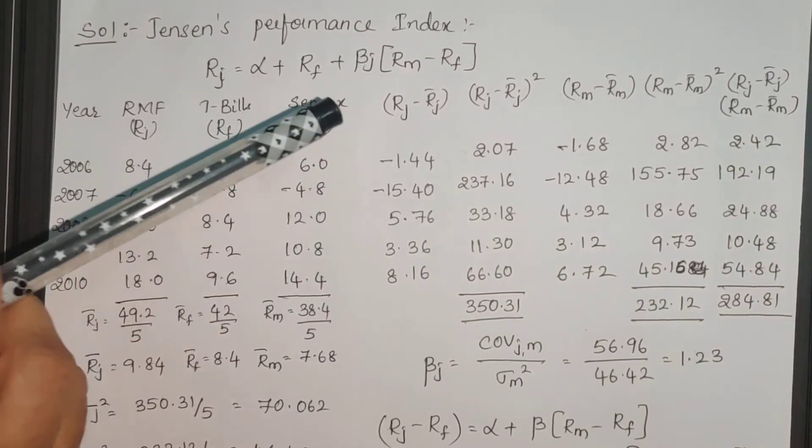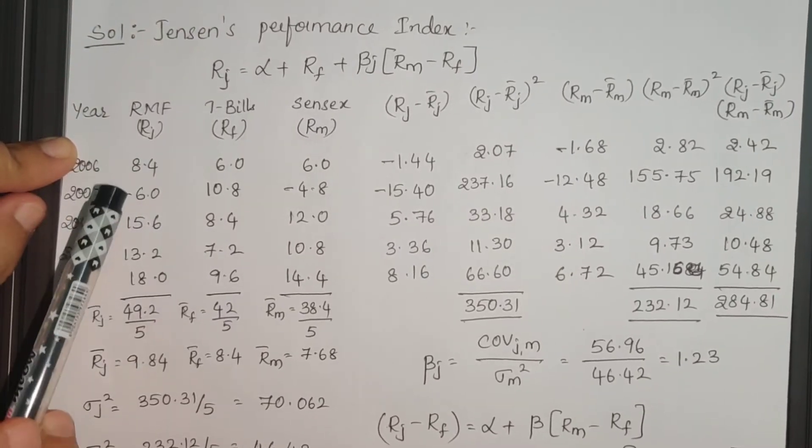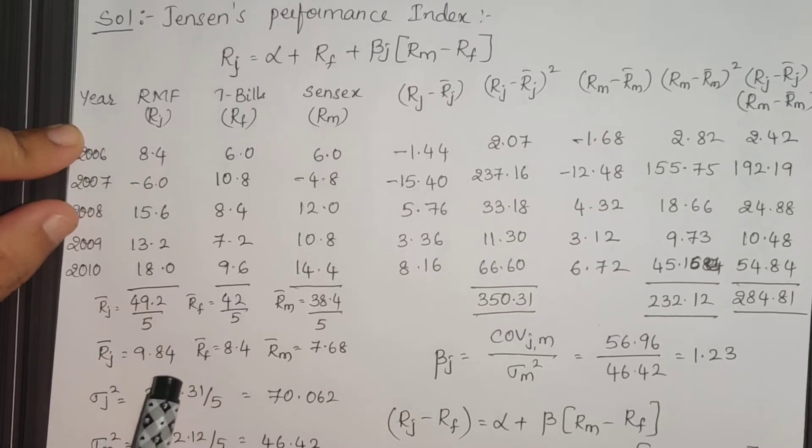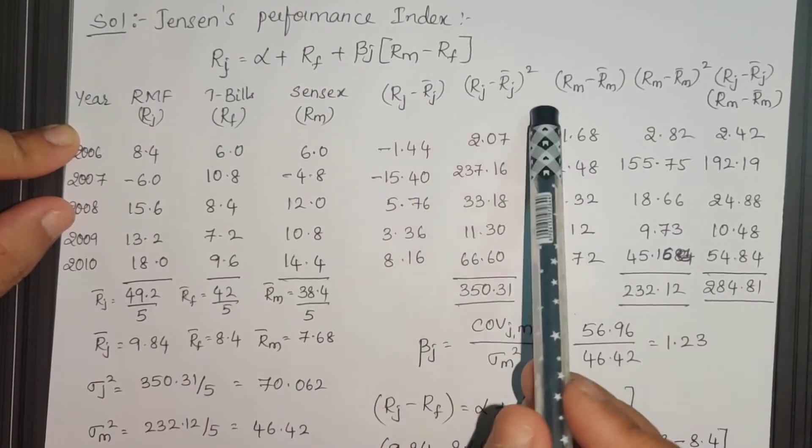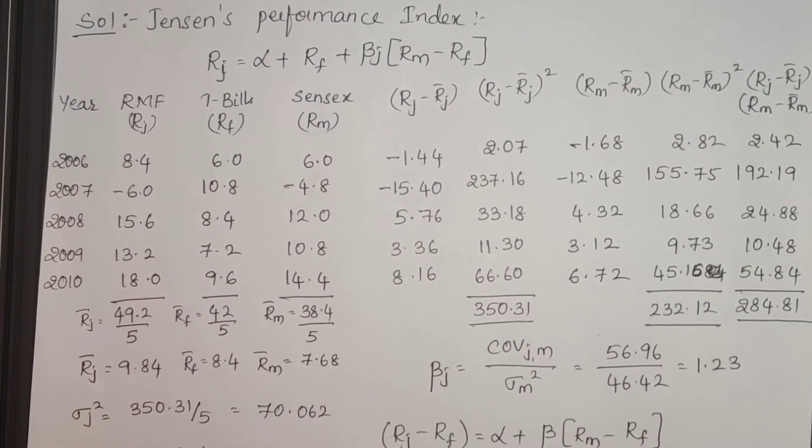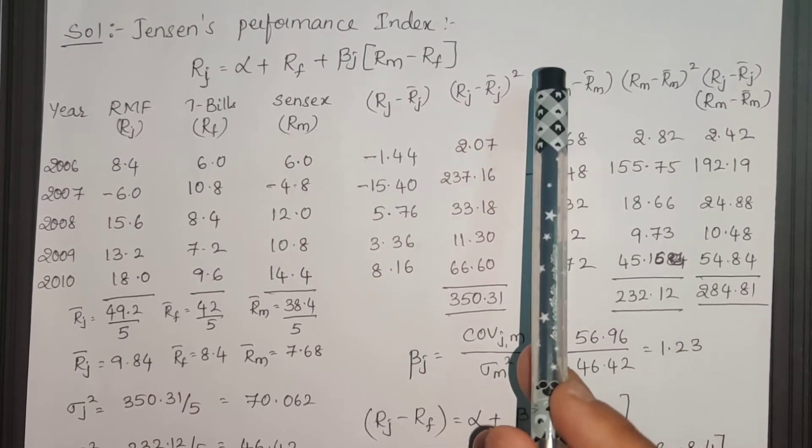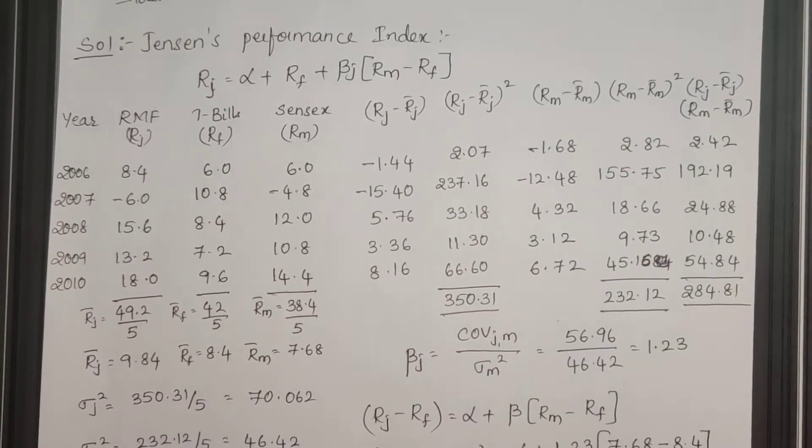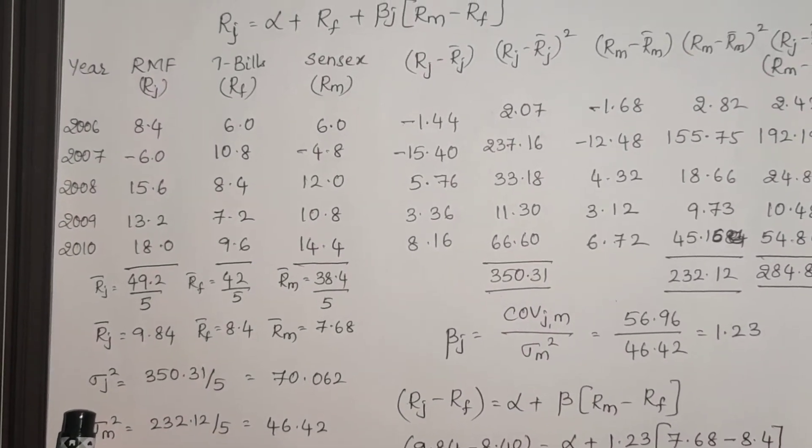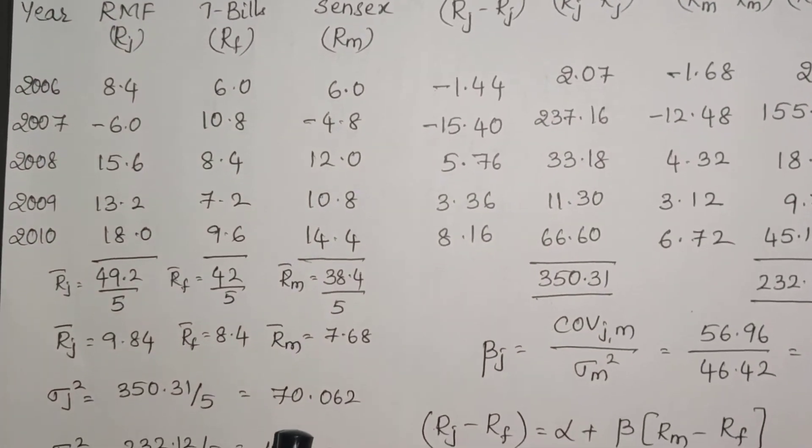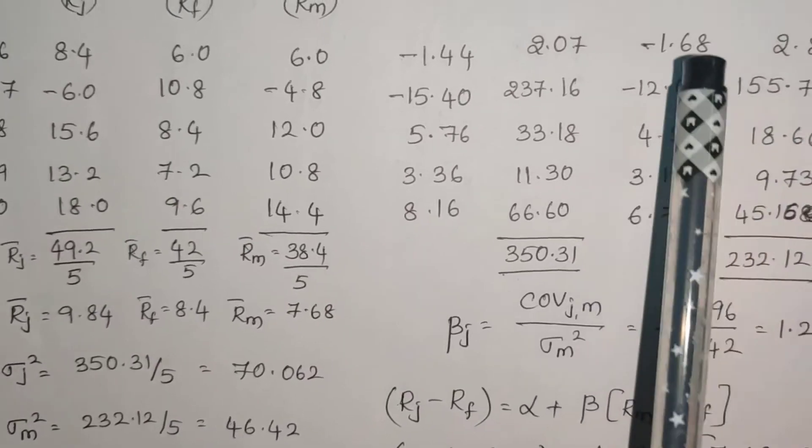First step of calculating risk on security is RJ minus RJ bar, individual returns minus expected return. That is the first step, and the next step is you square them, showing how much expected is deviating from realized or actual return. RJ minus RJ bar indicates that, then squaring the deviations, summing them up and dividing by number will give us the variance. Root of variance is standard deviation. This is how we have calculated the variance on security.